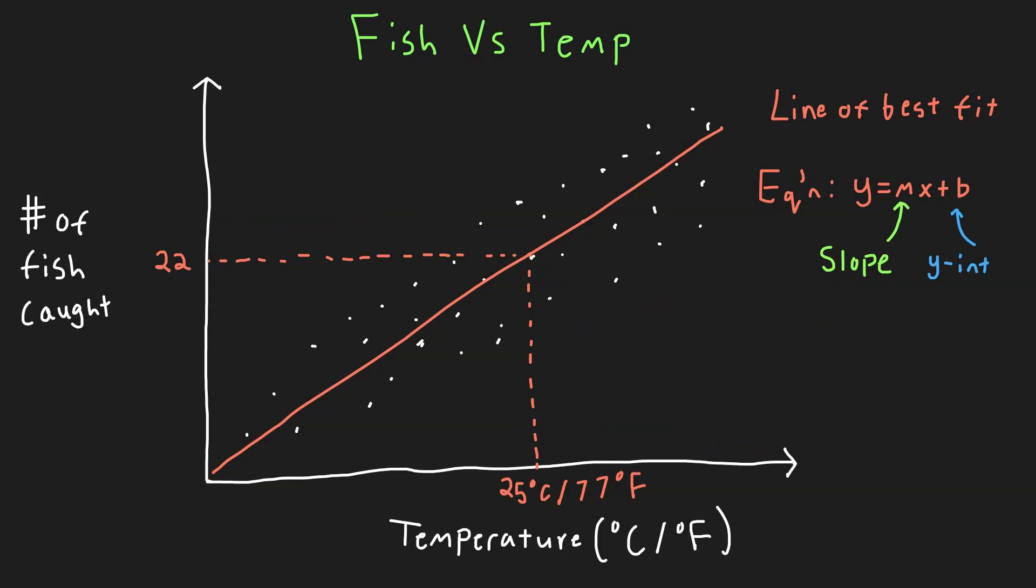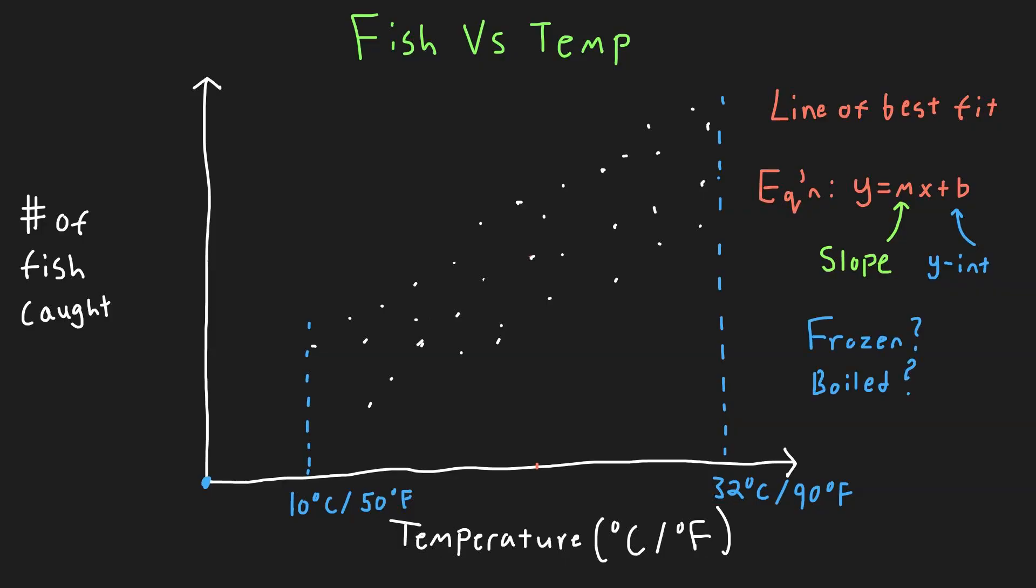B is the y-intercept or our baseline. This helps tell us how many fish we can expect if the temperature was 0 degrees. Now if we did look at 0 degrees, we might get negative fish, but that doesn't make sense in our case. This is because we should not extrapolate too far outside the data we actually have, as our model is likely only good enough for the data Matthew has actually collected. Extrapolating too far out when the water is frozen or boiled will give us erroneous values.